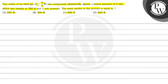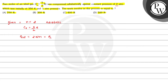Here we have to calculate work done. Firstly, we will write what is given. Number of moles n equals 2, CV equals 5/2 R. It is an adiabatic process against constant external pressure P_external equals 2 atm, which is also P2. P1 is given as 1 atm and the initial temperature T1 equals 350 Kelvin.